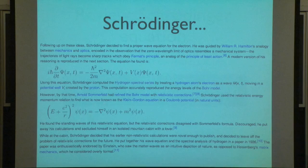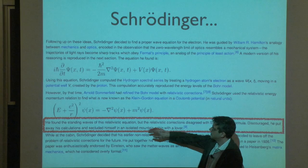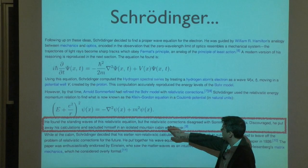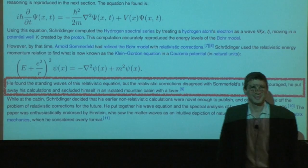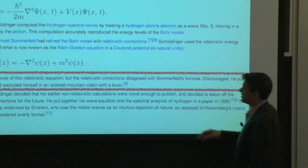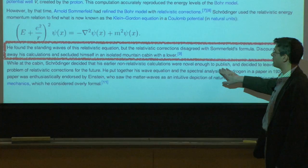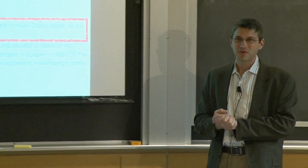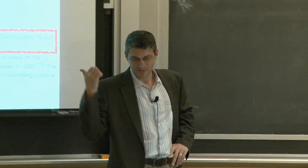An interesting historical note: Schrödinger first found the standing waves of the relativistic equation, but the relativistic corrections disagreed with Sommerfeld's formula. Discouraged, he put away his calculations and secluded himself in an isolated mountain cabin. When he came back, he decided his earlier calculations were novel enough to publish — which is fortunate, because it's one of the most important equations of the last century.